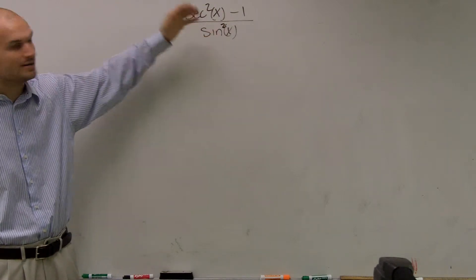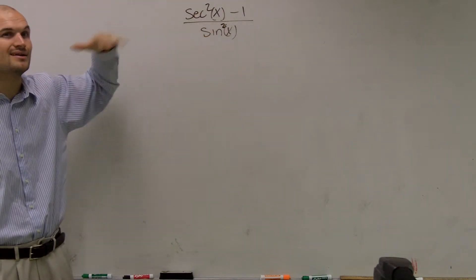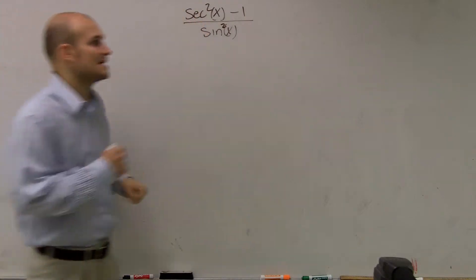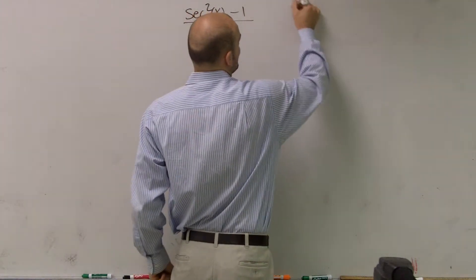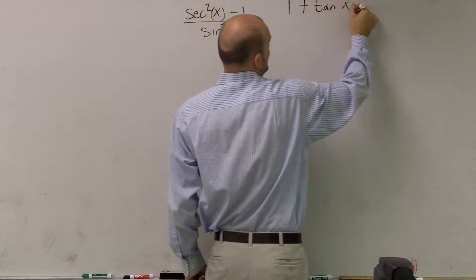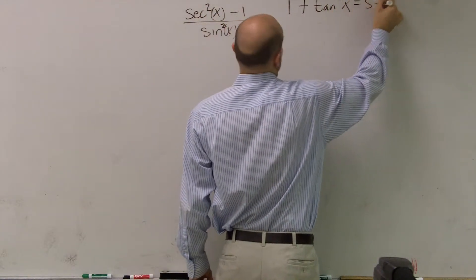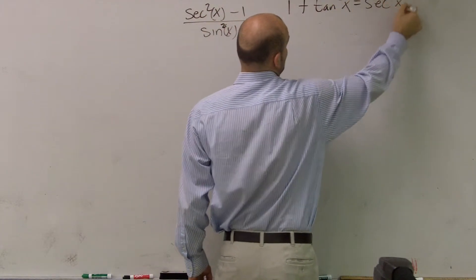I could transfer my sine squared. But when I see that secant squared minus 1, let's automatically try to put it in terms of sine and cosine. So remember, I have 1 plus tangent squared of x equals secant squared of x.